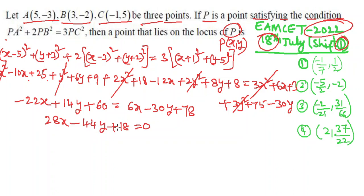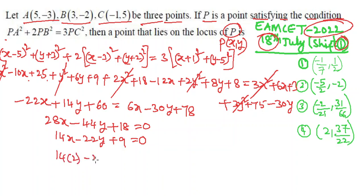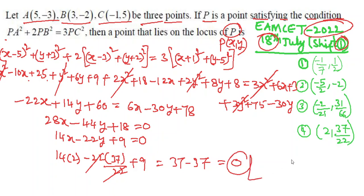Now substituting the options into the equation 14x−22y+9 = 0. Substituting the 4th option: x = 2, y = 37/22. Since there is 22y, substituting gives 14×2 − 22×(37/22) + 9 = 28 − 37 + 9 = 0. So the 4th option satisfies the equation. The locus of the point is (2, 37/22).